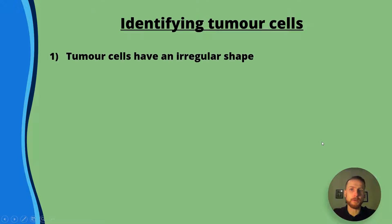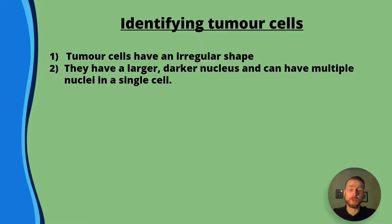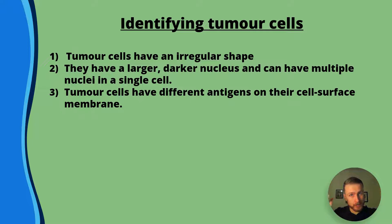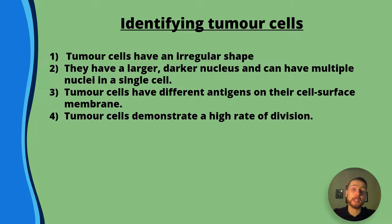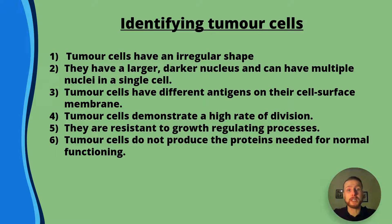When identifying tumour cells: tumour cells have an irregular shape. In a pathology lab visit, slides from leukaemia patients showed strikingly how many white blood cells were present in a blood sample compared to a healthy sample. Tumour cells have a large, darker nucleus and can have multiple nuclei in a single cell, indicating a very high rate of DNA replication and therefore cell division. They also have different antigens — different proteins on their cell surface membrane that trigger immune responses — and demonstrate a high rate of division. Tumour cells are resistant to growth-regulating processes and do not produce the proteins needed for normal functioning, because the genes needed aren't necessarily switched on and those not needed aren't necessarily switched off.